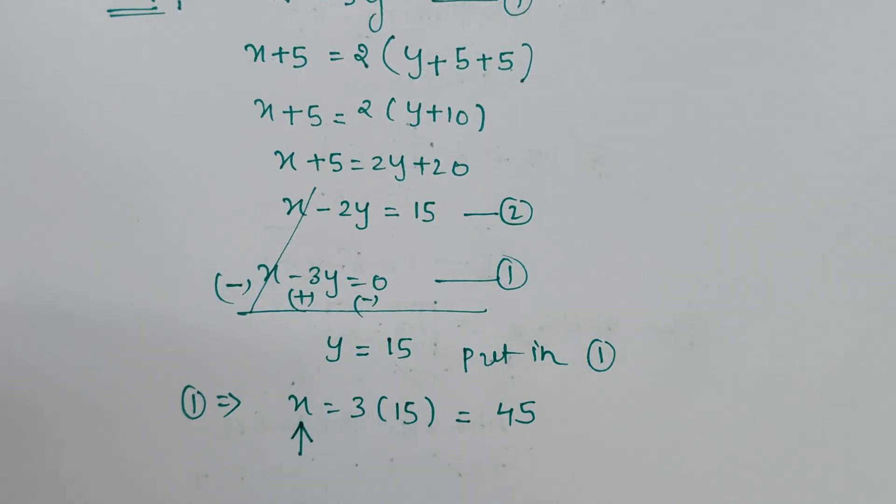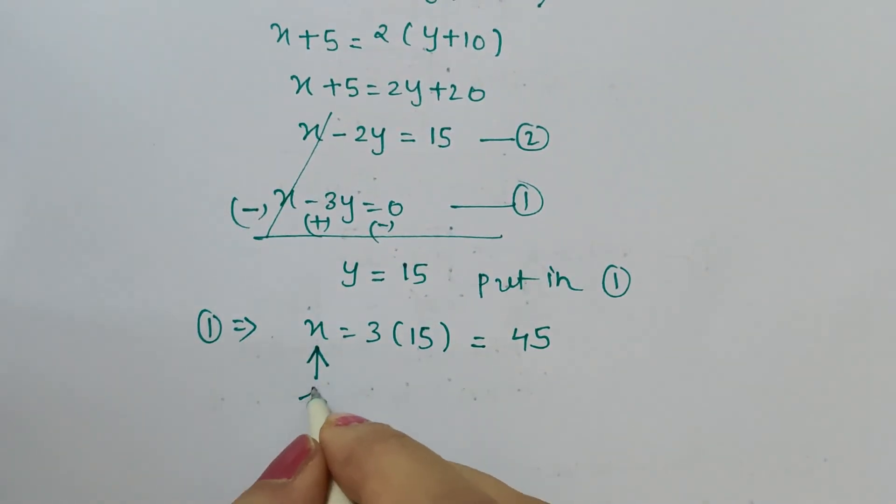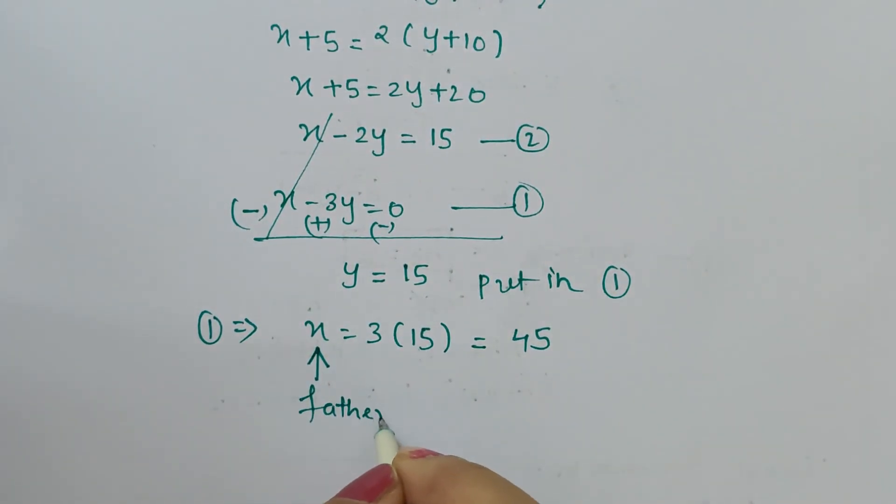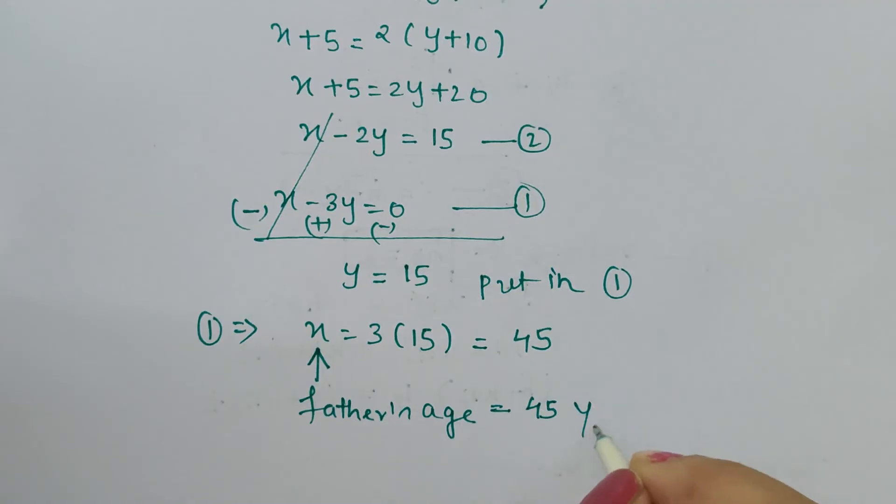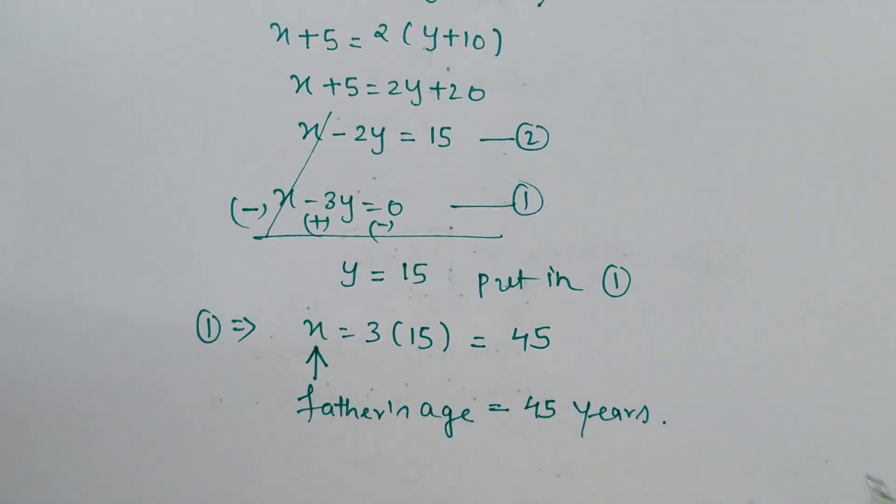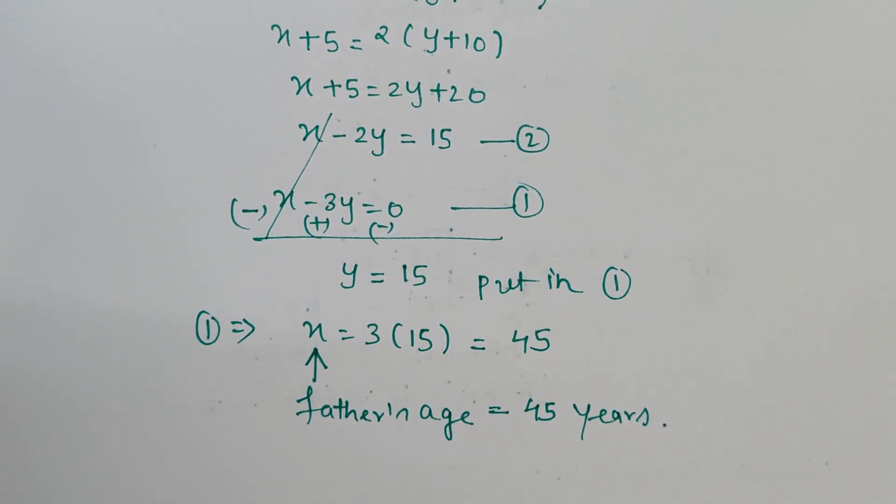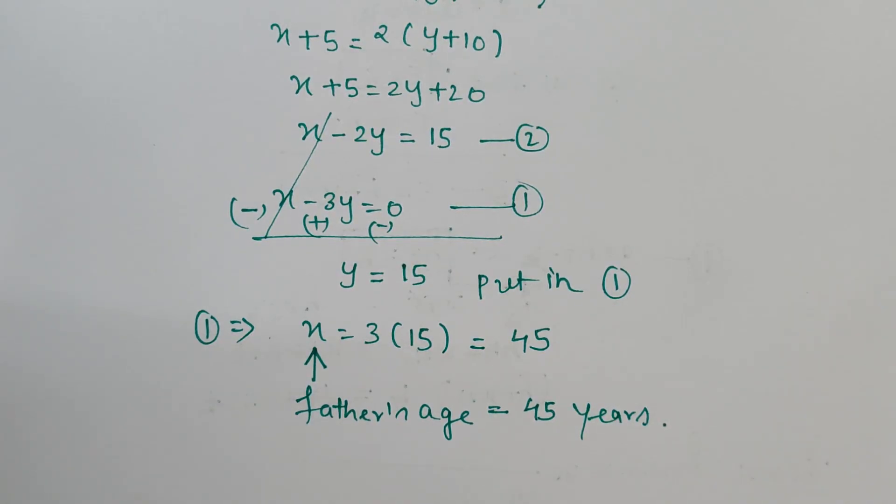What did we assume x as? x was present age of father. This was father's age, which has come out as 45 years. This is how such questions are to be solved. If you want me to solve any other question, you can write it in the comment box and soon you will be provided with the solution. Thank you and have a nice day.